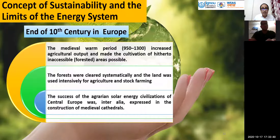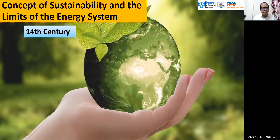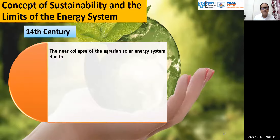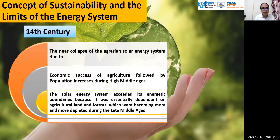When humans do not move their territory, the regenerating capacity of nature becomes lower than the rate of extraction. In the 14th century, a near collapse of the agrarian solar energy system occurred in European countries due to the economic success of agriculture followed by population increase. The solar energy system exceeded its energetic boundaries, both on agricultural land and in the forests.